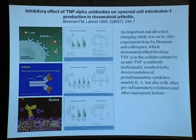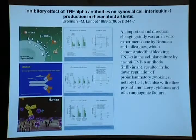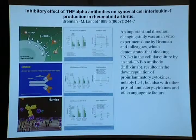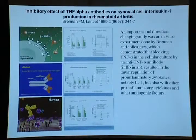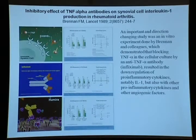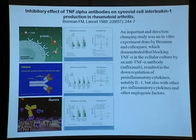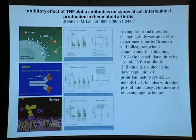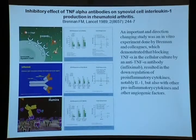An important direction-changing study was an initial experiment done by Professor Brennan, published in Lancet in 1989, which showed that blocking TNF-α in cellular culture using anti-TNF-α antibody resulted in downregulation of pro-inflammatory cytokines, notably IL-1. That's why TNF-α inhibitors became the mainstream of biological agents treating rheumatoid arthritis, with very good clinical effects.